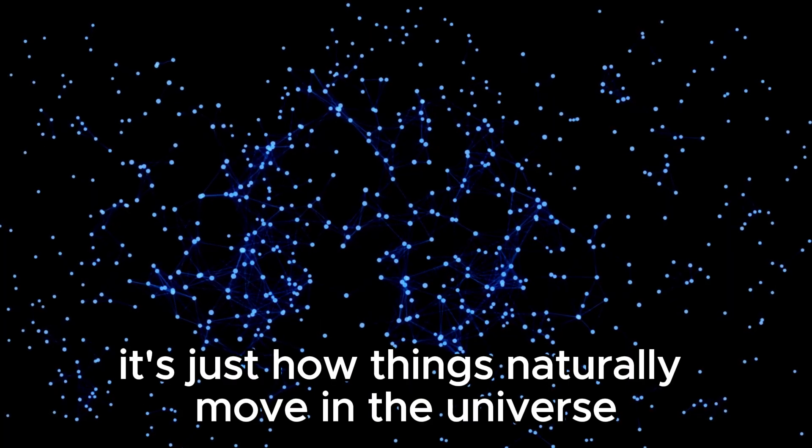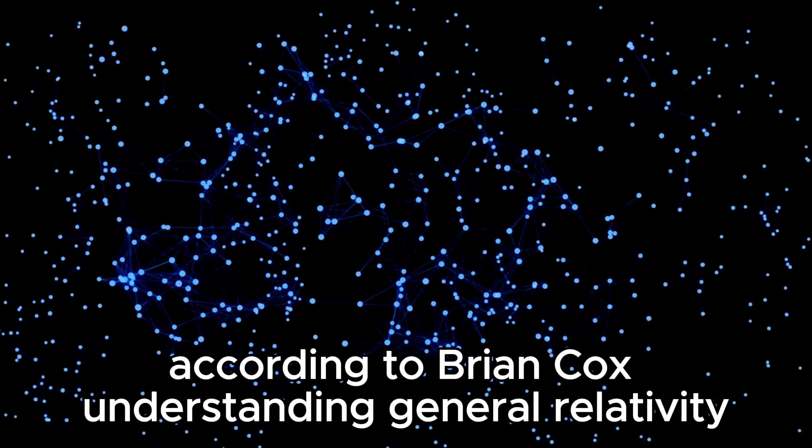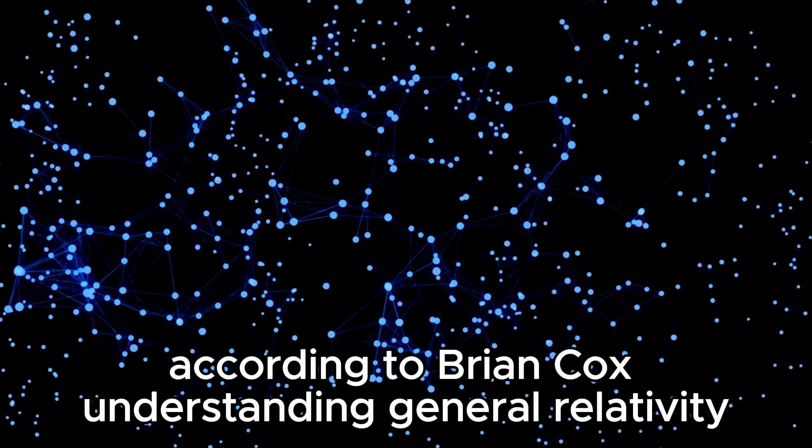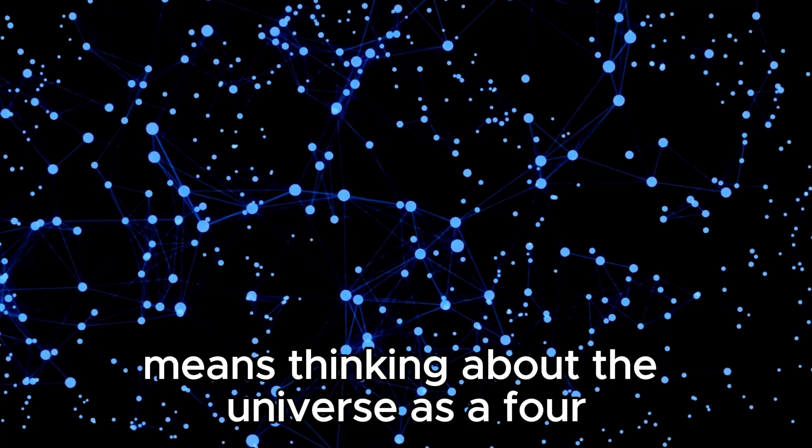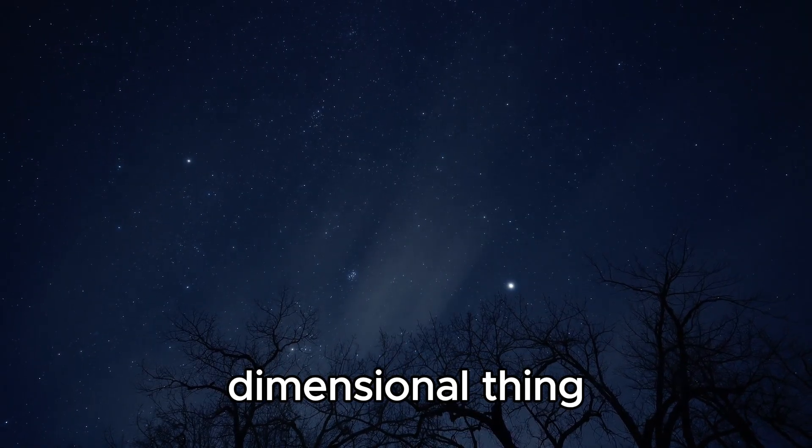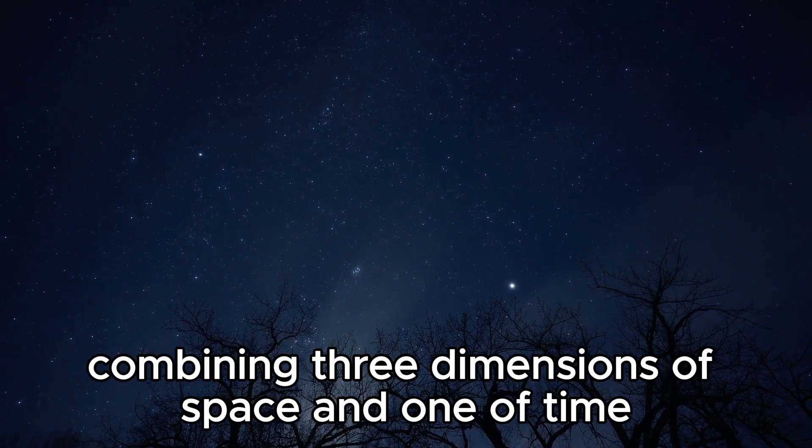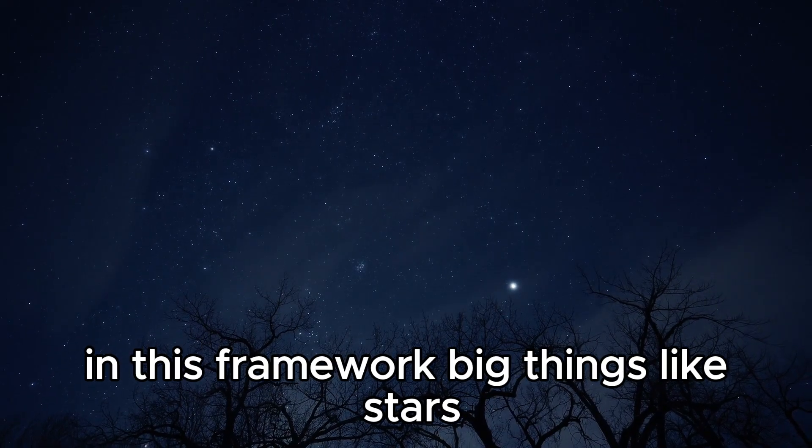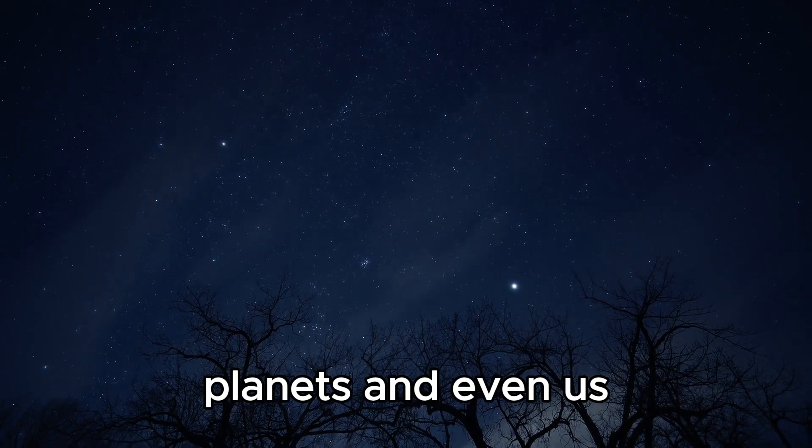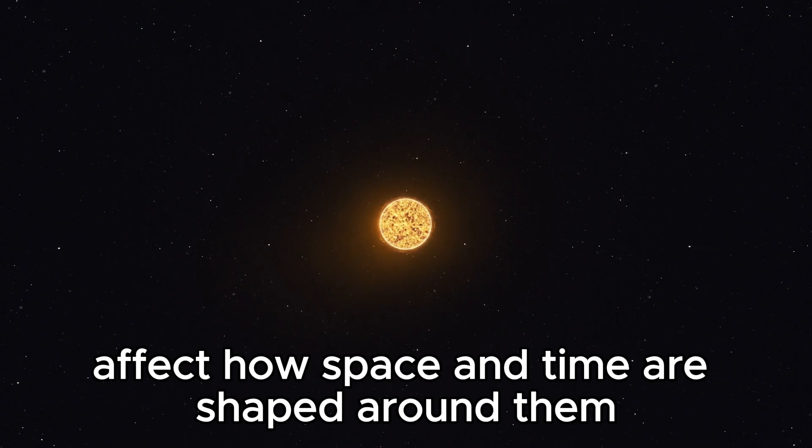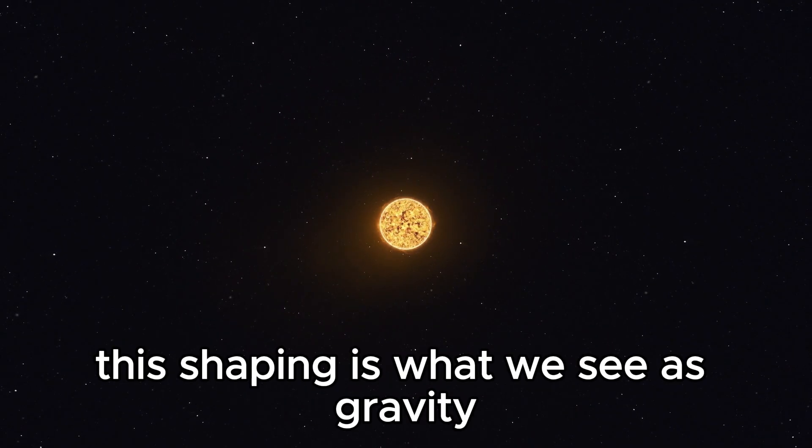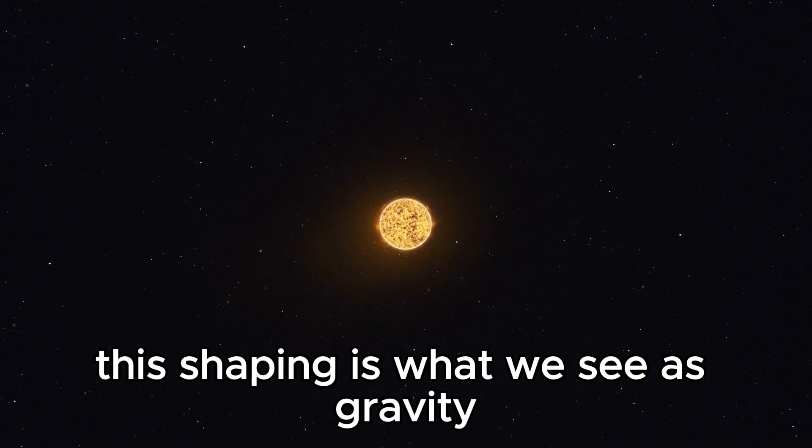According to Brian Cox, understanding general relativity means thinking about the universe as a four-dimensional thing, combining three dimensions of space and one of time. In this framework, big things like stars, planets, and even us affect how space and time are shaped around them. This shaping is what we see as gravity.